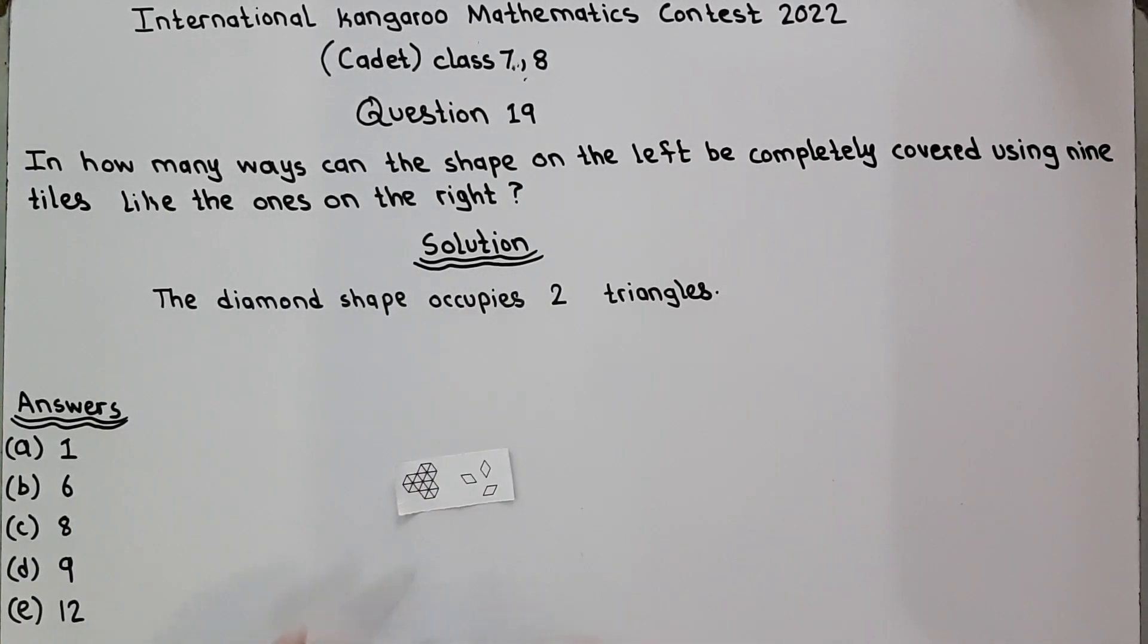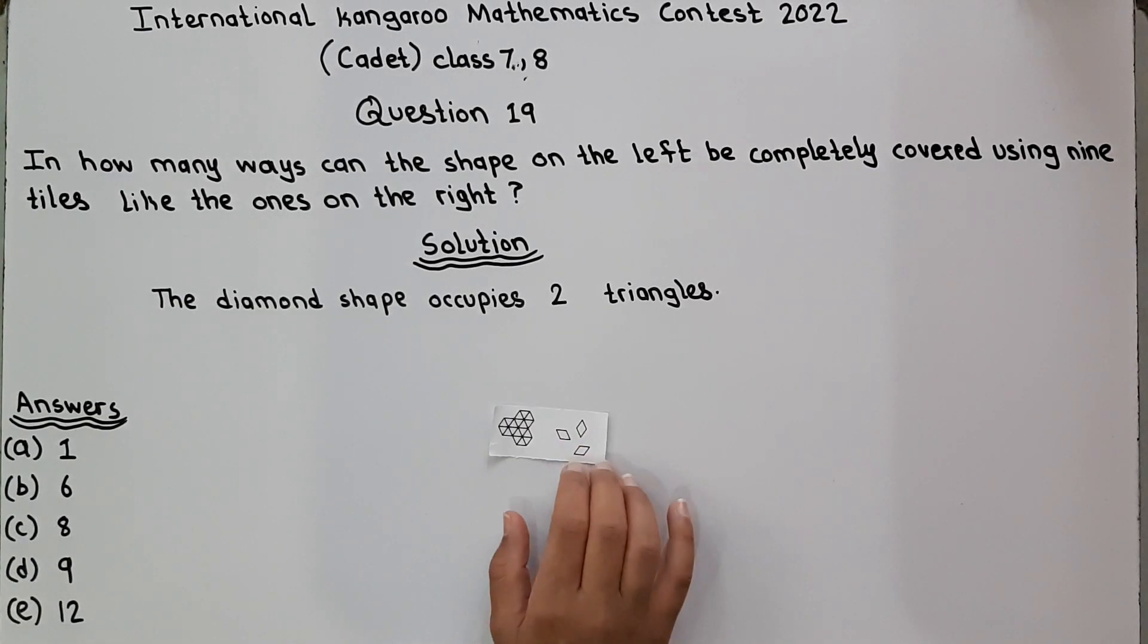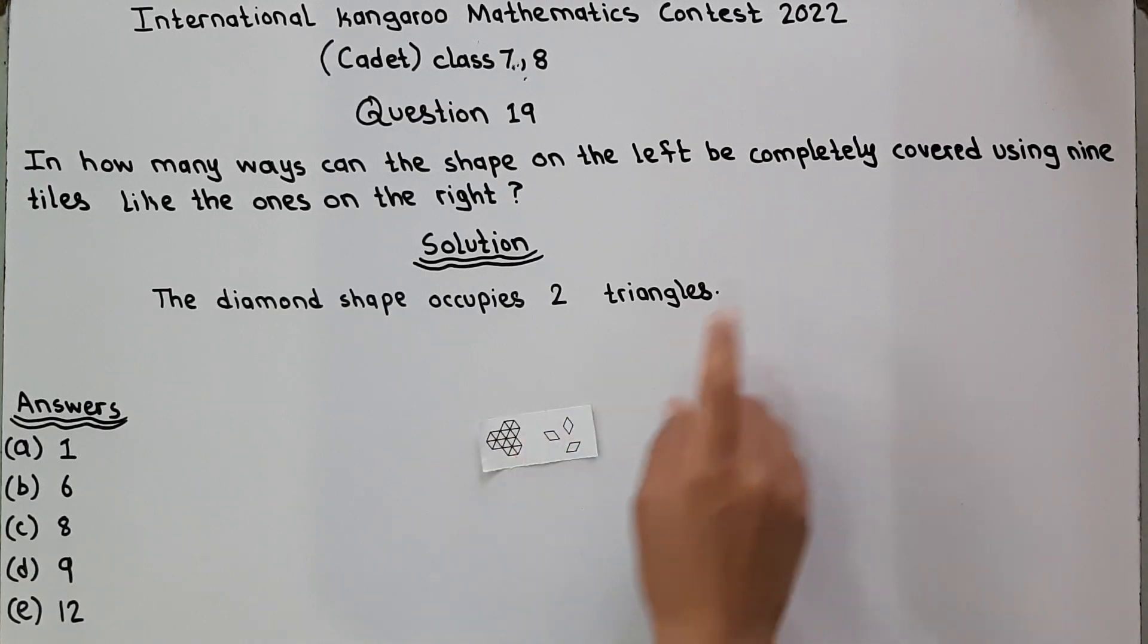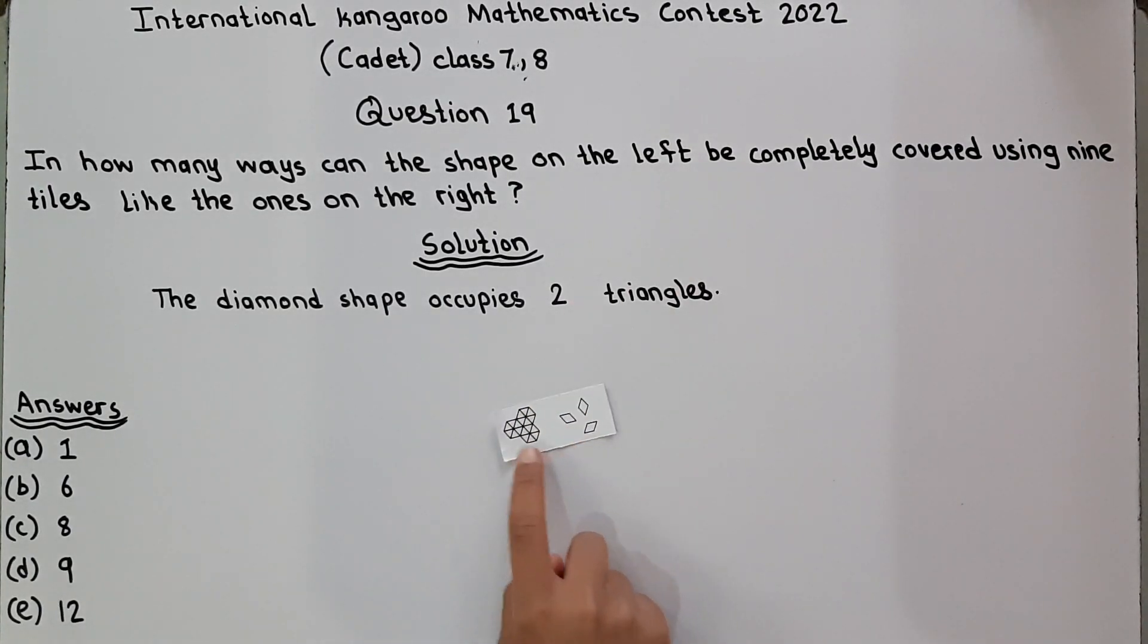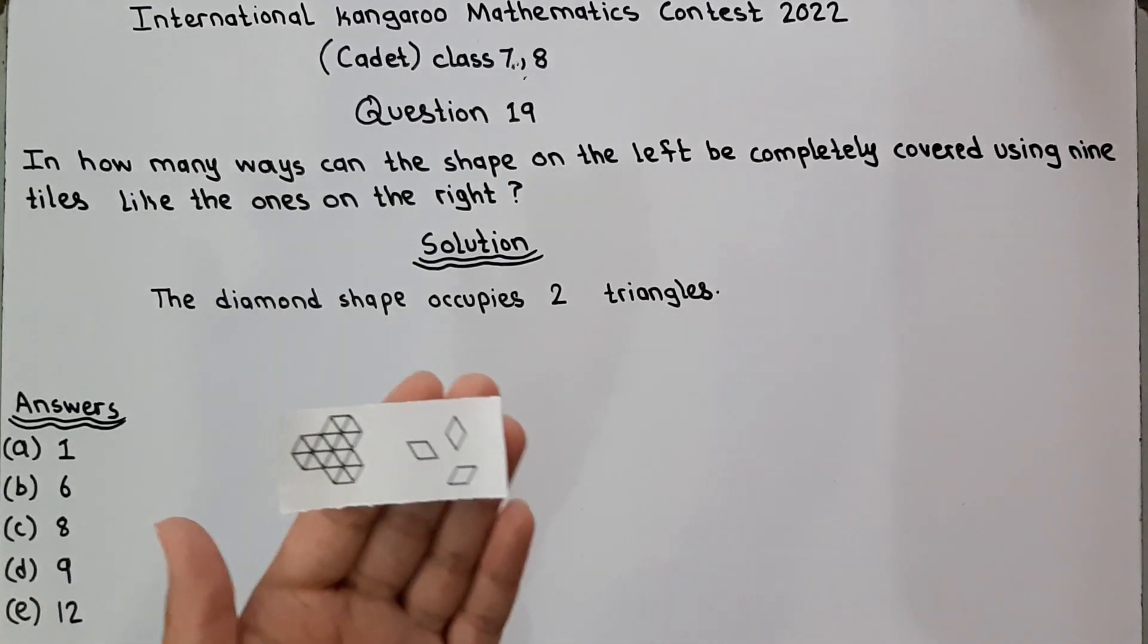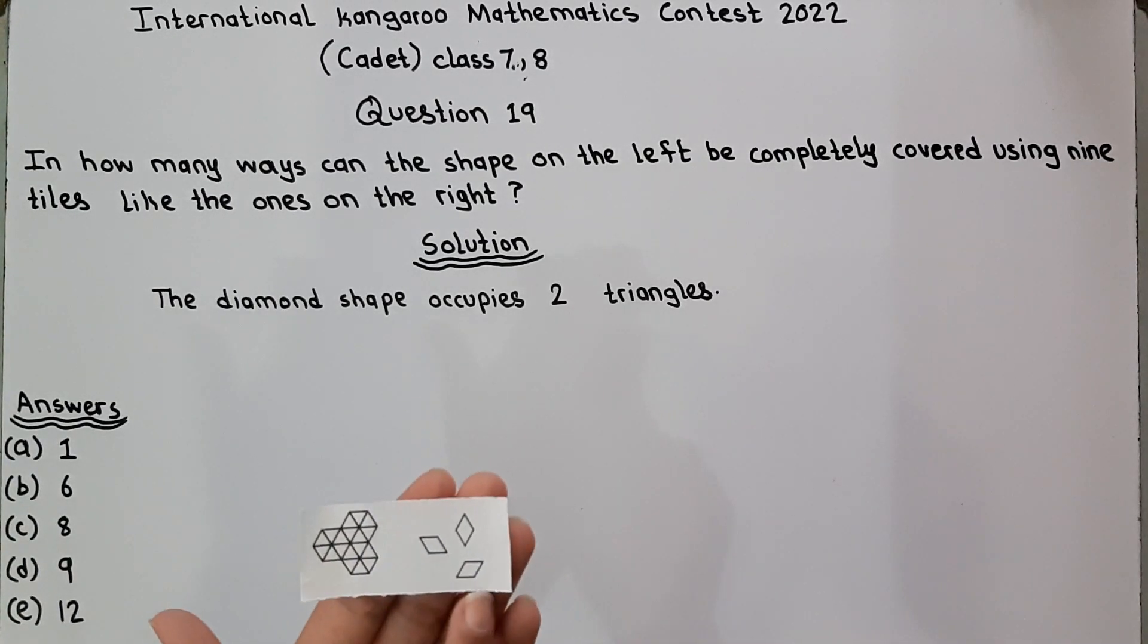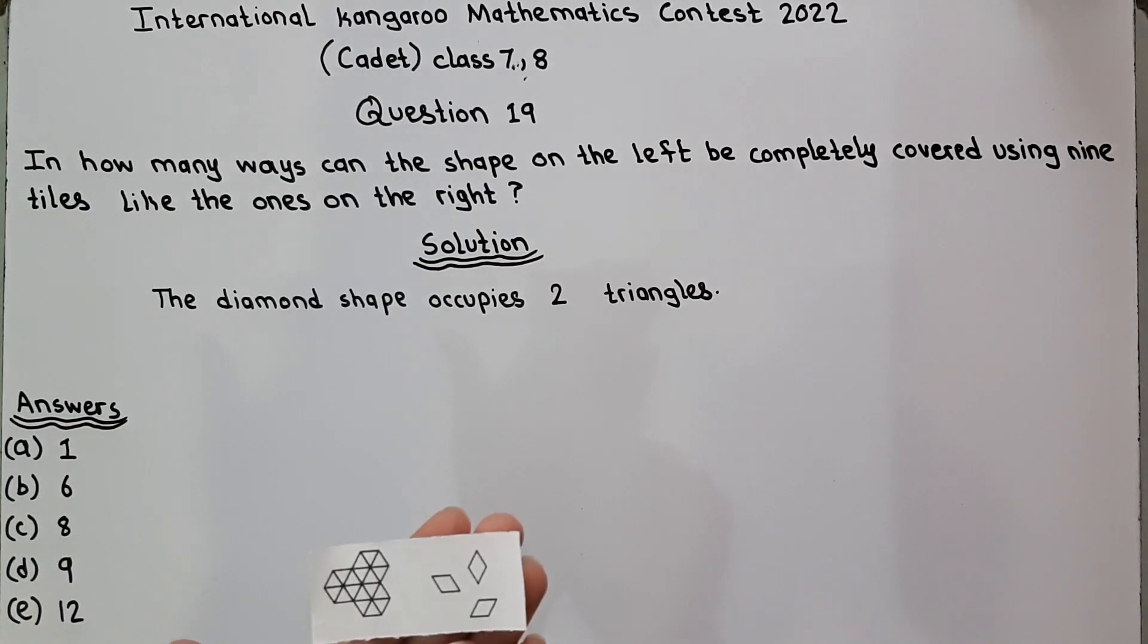So in the question they are saying, in how many ways can the shape on the left be completely covered using 9 tiles like these ones? Using 9 tiles, in how many ways can the shape be colored?